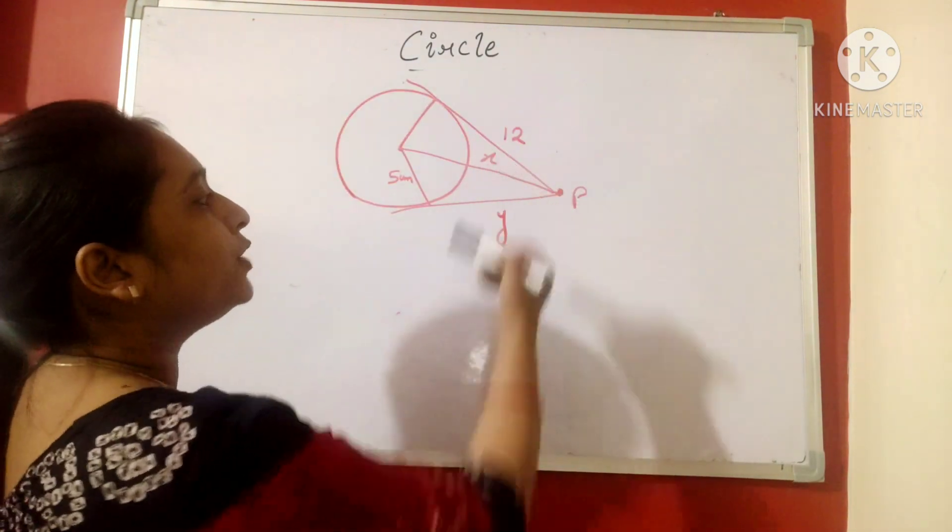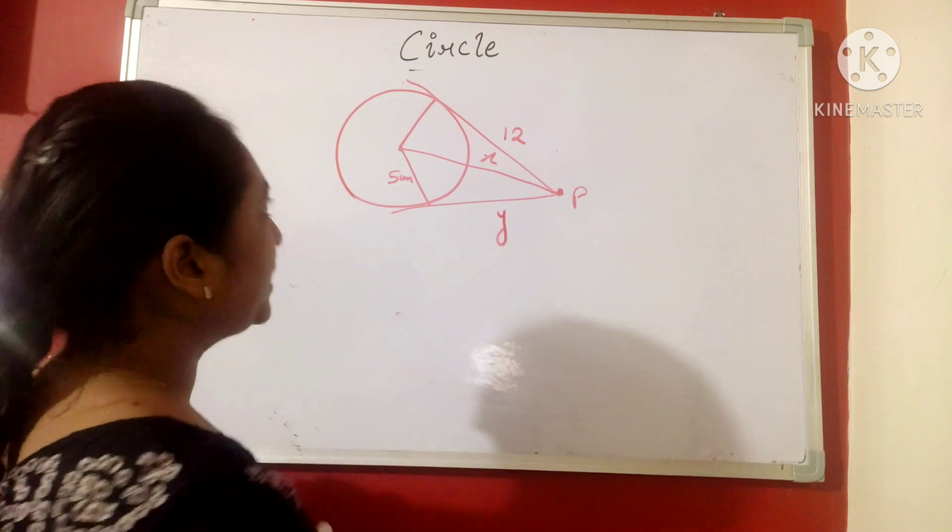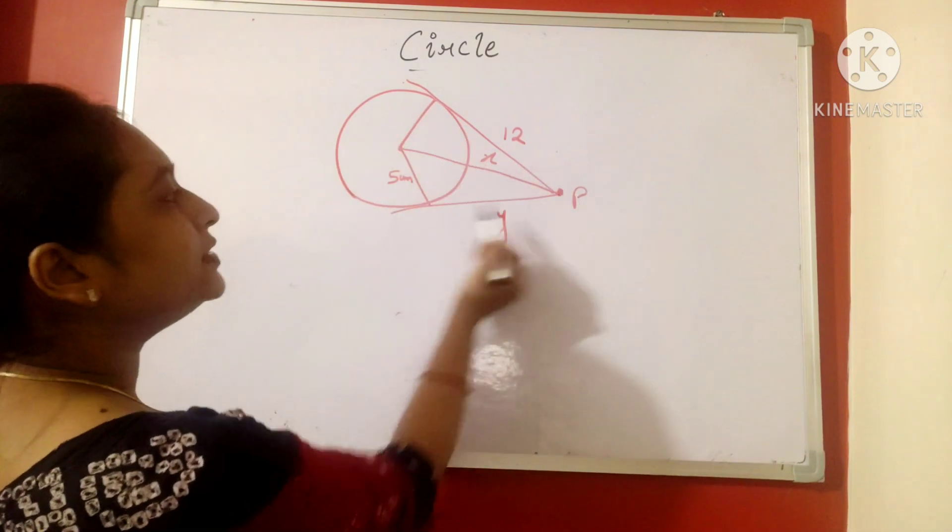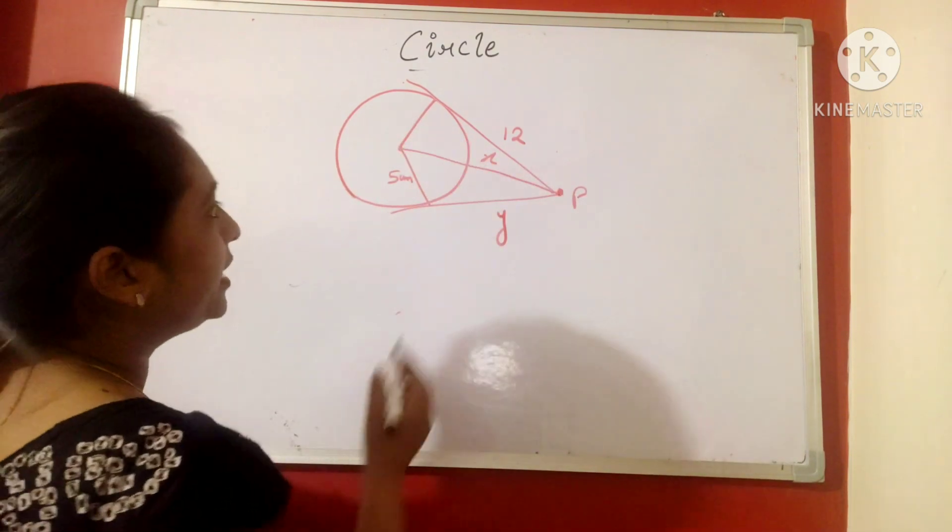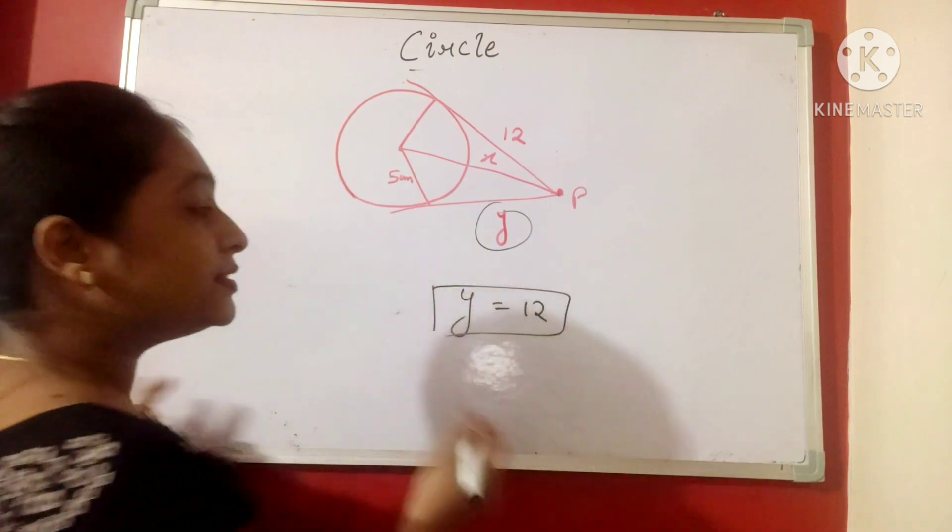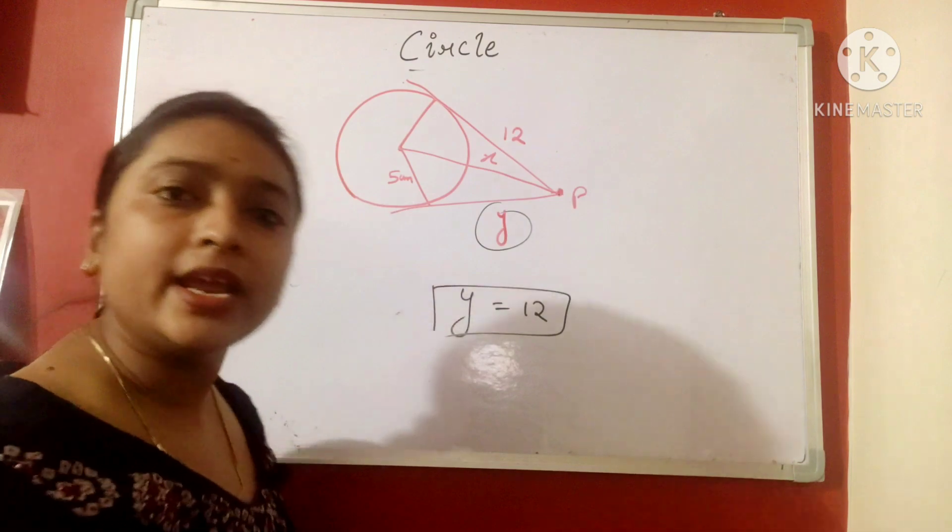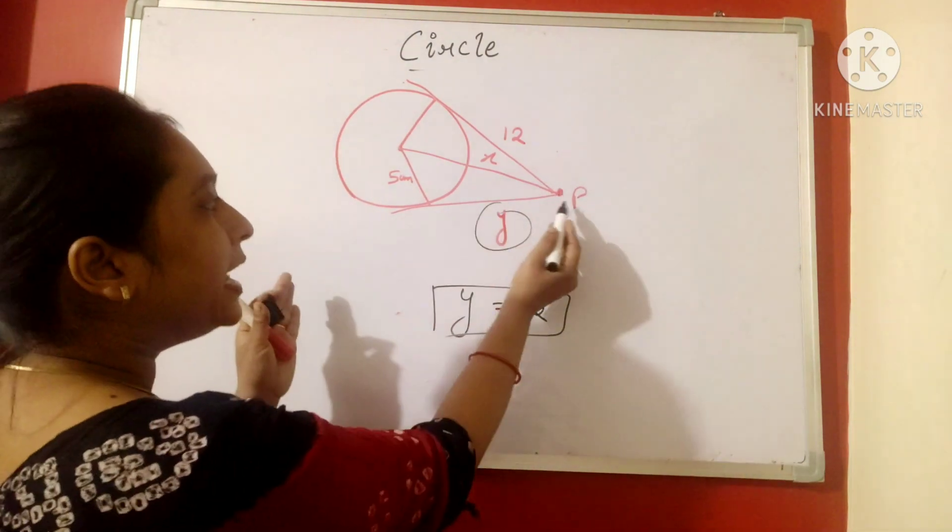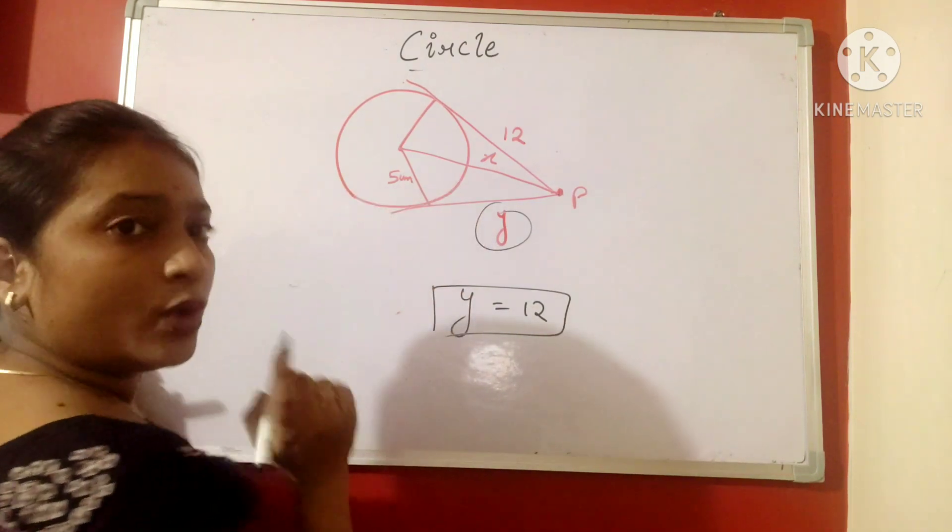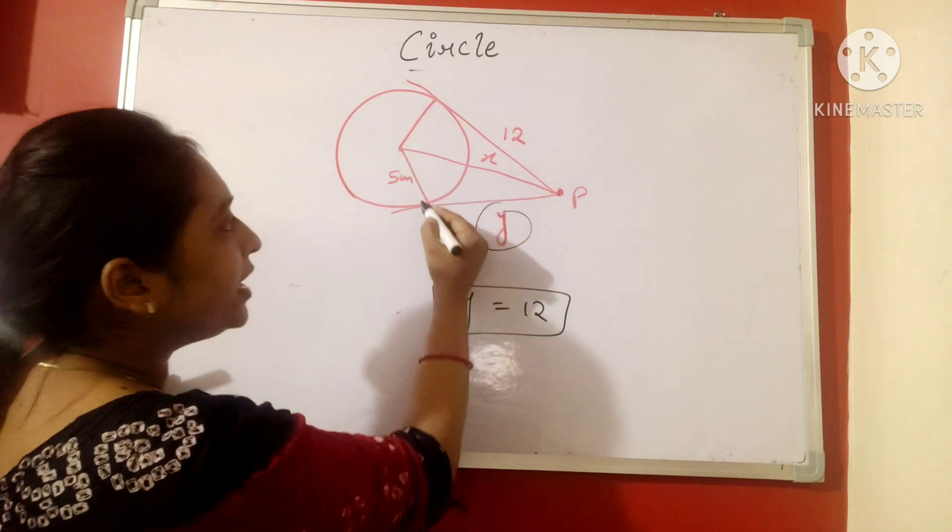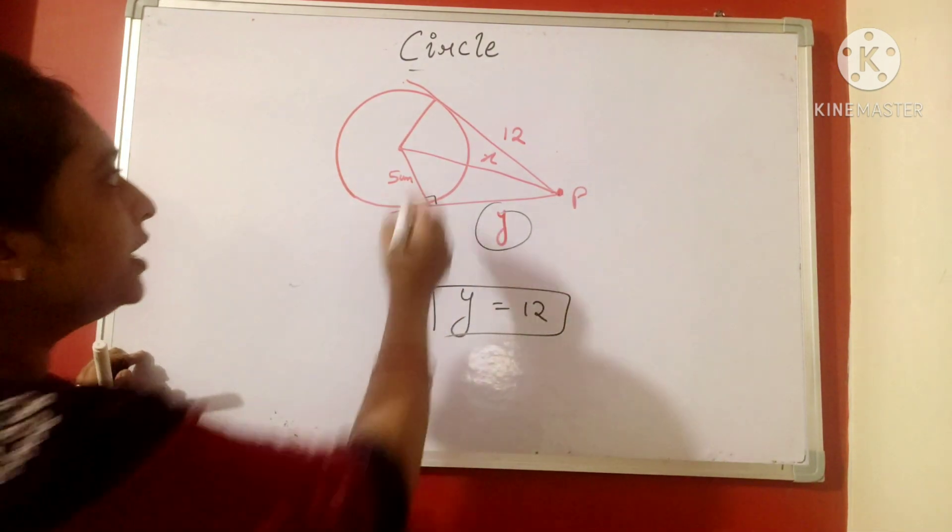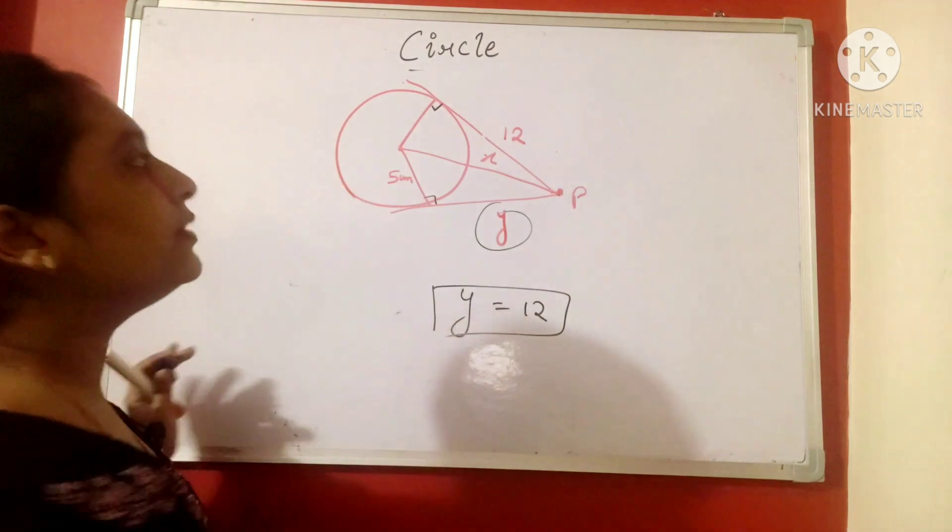In this question, we have to find out the value of X and Y. Now, if we see this as a point P which is outside the circle and two tangents are originating from here. So, Y will be 12 from here directly because the property was there. Whenever a tangent originates from a common point, the length of the tangents will be equal. So, Y we got 12 from here and one more property was there like when radius and the tangents meet at a point, that point will have 90 degree. And so, here it will also have 90 degree.